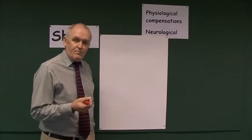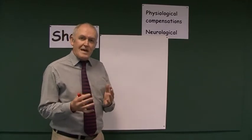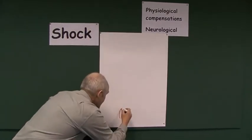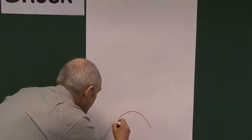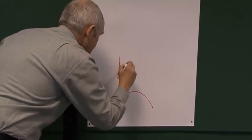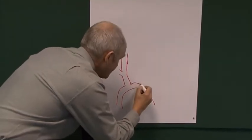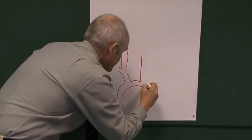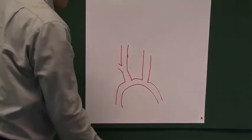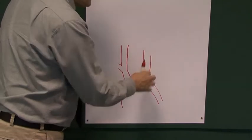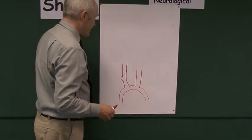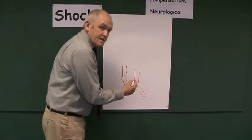We now want to think about the neurological compensations. Let's begin this story down in the aorta. Here we have the arch of the aorta, and coming off that we have a common carotid artery — the left common carotid artery branches straight off the aorta. The aorta carries on taking blood down to the rest of the body. These common carotid arteries are the big arteries you can feel pulsating in your neck.